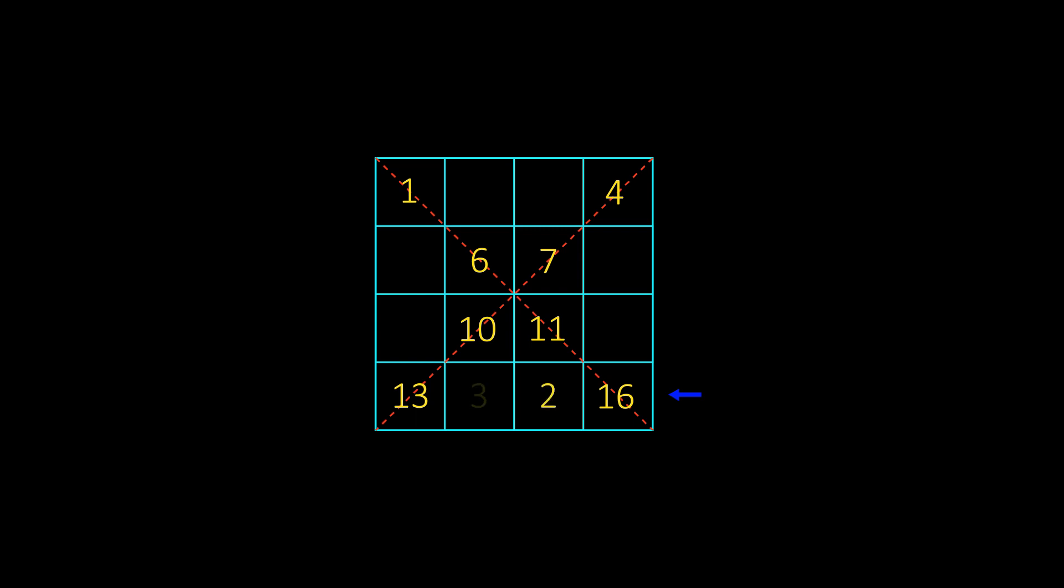Count backward from 1 to 16 to fill in the remaining positions. And that's the magic square.